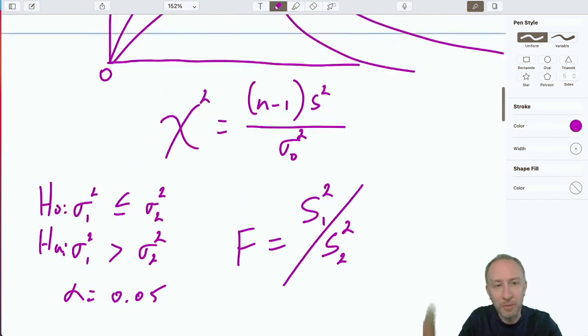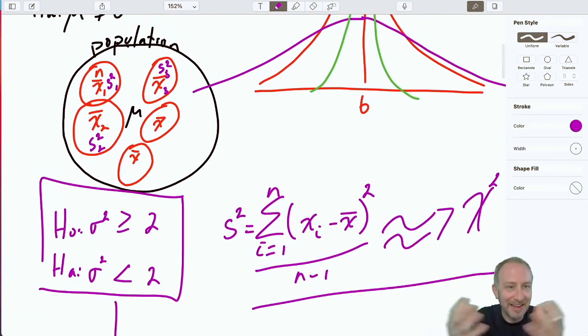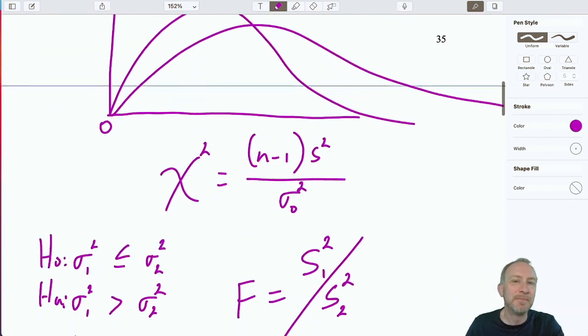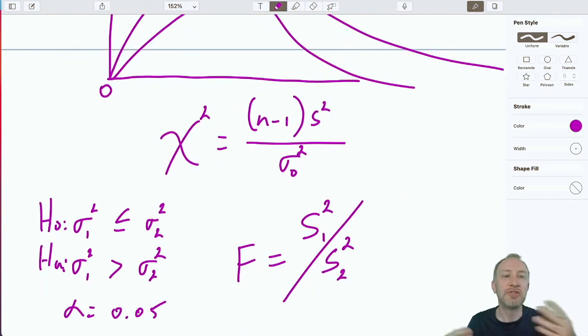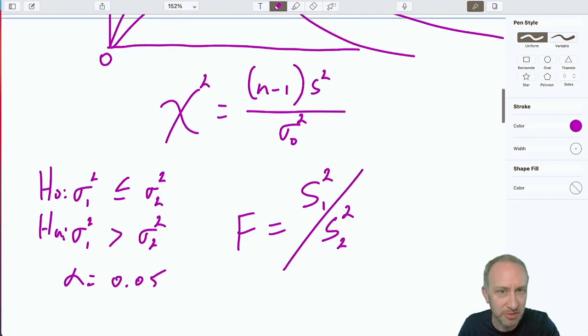The f-distribution is the ratio of two chi-squared variables. So, when we look at single population tests, we work with the chi-squared distribution. And that brings us to the ability to do tests on two population variances, which uses the f-distribution.